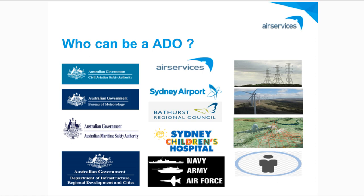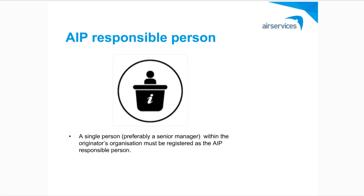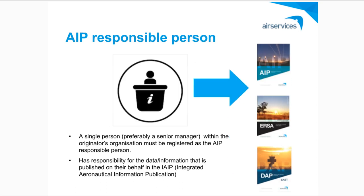As you can see, we collect data from a large cross-section of players in the industry, and ensuring we get data from the correct person or organisation is challenging. So now I'd like to introduce you to the AIP Responsible Person. It's a single person, and no, it's not scary to be one. Here's an extract from Part 175 that describes an AIP Responsible Person. Traceability of data and changes to that data is one of the aeronautical data quality requirements I mentioned earlier. Having a registered AIP Responsible Person does this — it allows traceability of the ownership of aeronautical data and authority to request changes to that data. Once received, we can then publish it on your behalf in the integrated AIP products.